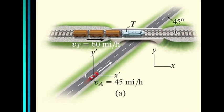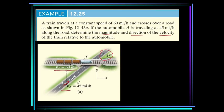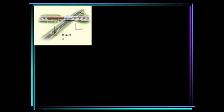Here's a problem. This train is traveling at a constant speed of 60 miles per hour and crosses over a road. The automobile A is traveling at 45 miles per hour along the road, and the road is at 45 degrees to the railroad track. Determine the magnitude and direction of the velocity of the train relative to the automobile. The equation we want is: velocity of the train equals velocity of the automobile plus velocity of the train with respect to the automobile.